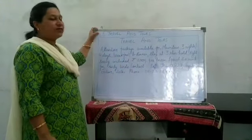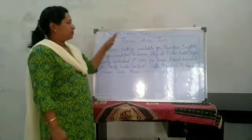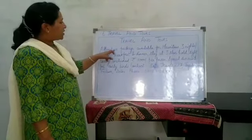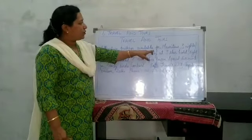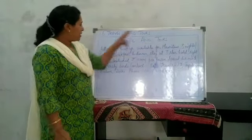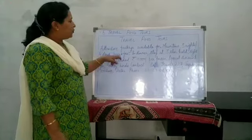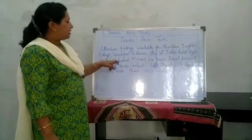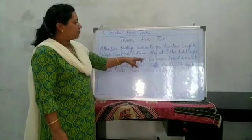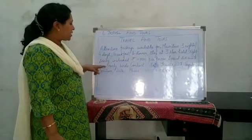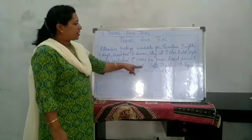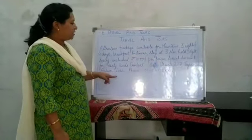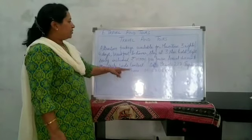The 6th type of classified advertisement is Travel and Tours. The heading is 'Travel and Tours,' with an attractive package available for Mauritius — 3 nights, 4 days, breakfast and dinner, stay at a 3-star hotel, sightseeing included, Rs. 10,000. Special discount for early birds. Contact: 3 Travels, 227 Jagrati Enclave, Delhi, with a phone number.